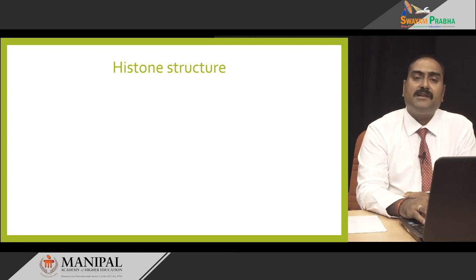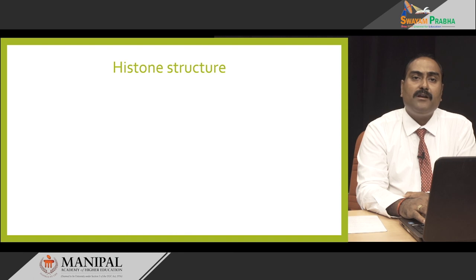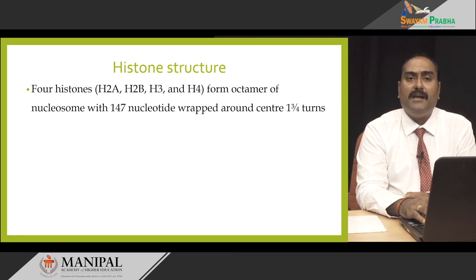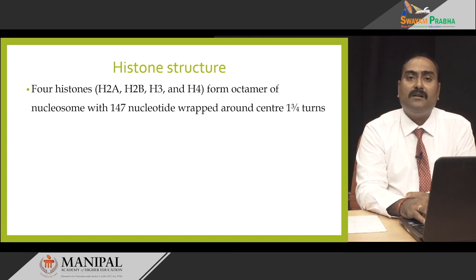We saw in the last diagram the beaded appearance, which is nothing but the nucleosome model in which we have a central protein core around which the DNA is wound. The central protein core is known as the histone core, which is an octamer made up of four histone proteins: H2A, H2B, H3, and H4. This octamer basically forms the nucleosome core with 147 nucleotides of DNA wrapped around it, forming approximately 1.75 turns.